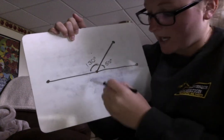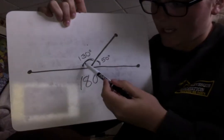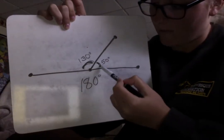130 plus 50 is 180. Okay so that's why it's telling us that if this is 130 then the rest of it is 50.